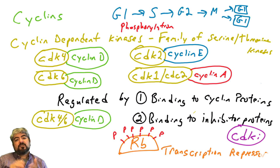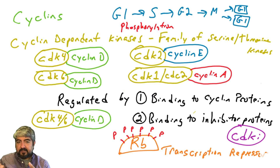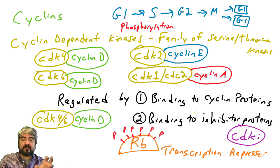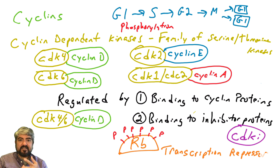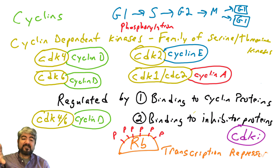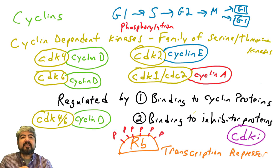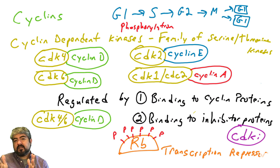These cyclin-dependent kinases are regulated by cyclins, and in later videos we'll learn about another family of proteins called CDK inhibitors. Examples include P27, P21, P16, and P15. These are small proteins that bind to cyclin-CDK complexes and inhibit the CDKs from functioning — another way to regulate the cell cycle.